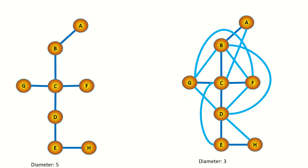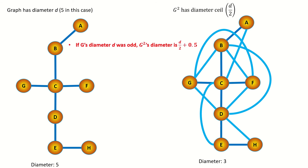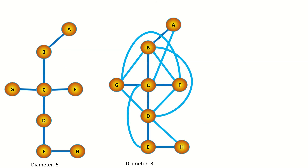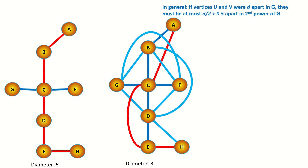Can you see what's going on here? Suppose we have a graph with diameter d — in this case 5 — then the diameter of its second power will be the ceiling of d over 2, or in this case 3. In other words, if the diameter of the original graph is odd, then the diameter of its second power will be d over 2 plus 0.5. And if the diameter d is even, then the diameter of its second power will be d over 2. Intuitively, this is true because the second power allows us to skip two steps at a time, meaning that any given path is shortened by about a factor of 2. For example, if we have some shortest path between two vertices u and v that takes an odd number d of steps, such as the 5-step shortest path between vertex a and vertex h shown here, those same vertices must be at most d over 2 plus 0.5 steps apart in the second power graph.